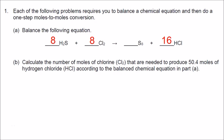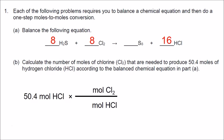Part B: calculate the number of moles of chlorine, Cl2, needed to produce 50.4 moles of hydrogen chloride according to the balanced equation in Part A. We draw a line for the conversion factor, putting moles of HCl on the bottom and moles of Cl2 on the top. The coefficient for Cl2 is 8 and for HCl is 16. So we calculate 50.4 times 8 divided by 16, and we get 25.2 moles of chlorine.